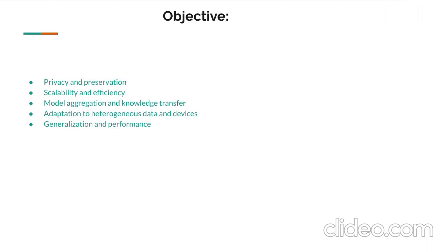I am Muhammad Jawad and I will talk about the objectives of this presentation. First, privacy preservation: one of the main objectives of Federated Learning is to enable collaborative model training while preserving the privacy of user data. Large language models often require substantial amounts of data, and Federated Learning provides a way to leverage decentralized data without compromising user privacy. The objective is to develop techniques and algorithms that ensure sensitive data remains local to the devices or edge nodes while still enabling effective model training.